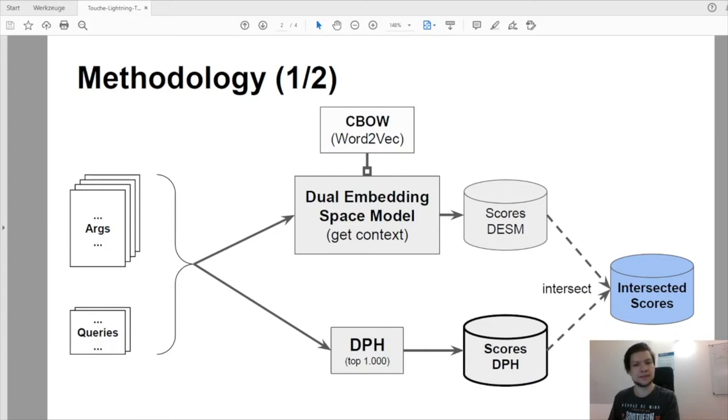Therefore, we calculated an intersection of both result sets in our third step. That means only DPH scores that correspond with the current context are kept as intersected scores.